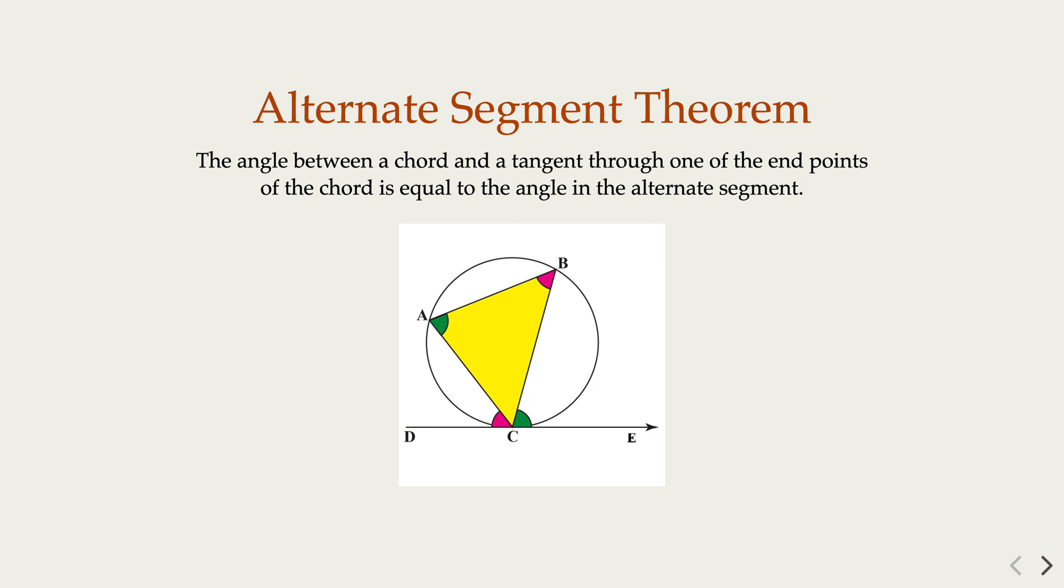In other words, in here, the green pair is equal to each other. The pink pair, the angles are congruent to each other. So that is a useful theorem we can use for this problem.